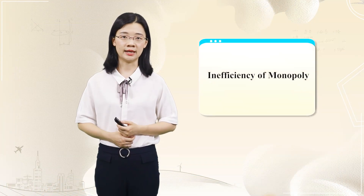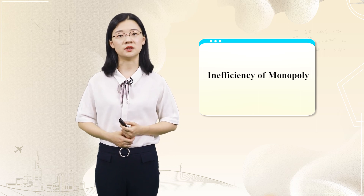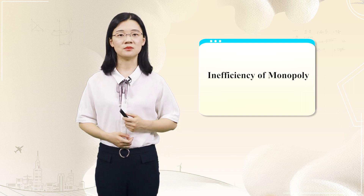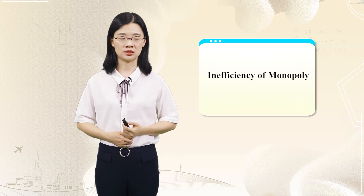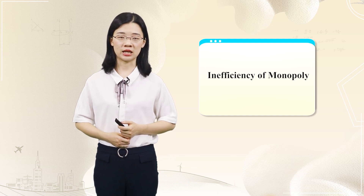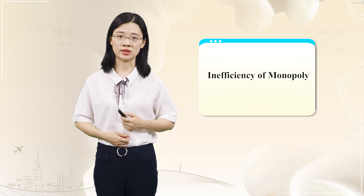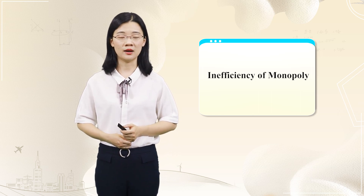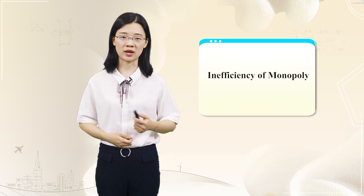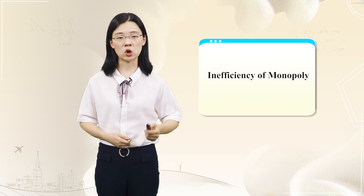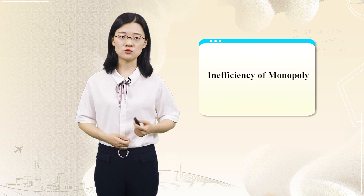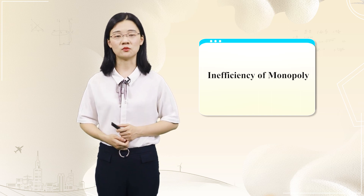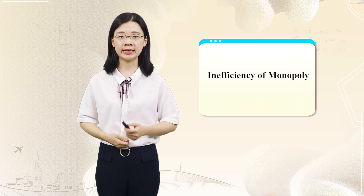The third topic of today is the economic efficiency of the monopoly market, or social welfare. In the previous part of this course, we introduced how to measure the economic efficiency of a resource allocation result using the concept of Pareto efficiency. If a certain arrangement of resource allocation could maximize total social welfare, then this arrangement is Pareto efficient; otherwise, the market is Pareto inefficient.